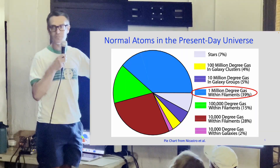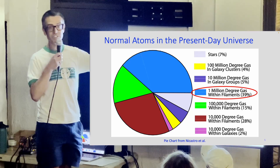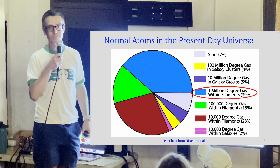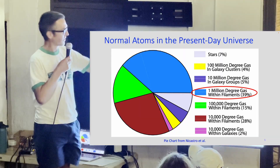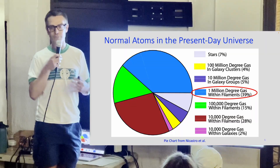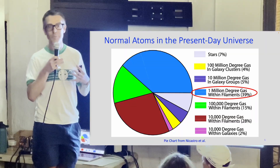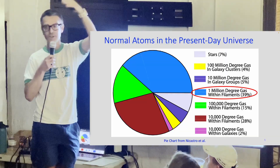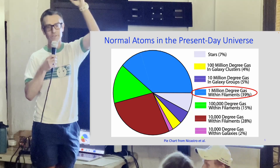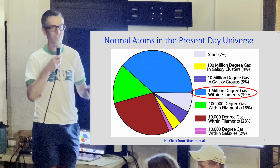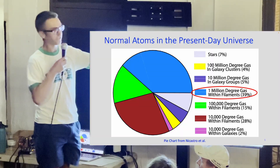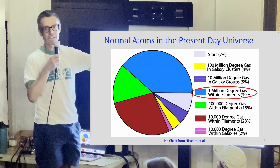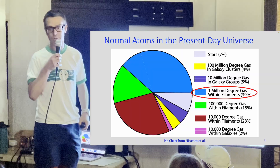Here's another pie chart breaking up how normal atoms are distributed. Starting with stars like our Sun — that's something like 7% of normal atoms. The rest is all gas of different temperatures. The gas in galaxy clusters is about 100 million degrees, because these clusters are so massive that gas pulled in under gravity converts its kinetic energy into heat, reaching 100 million Kelvin. That gas accounts for about 4% of normal atoms.